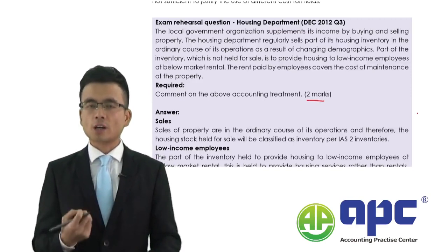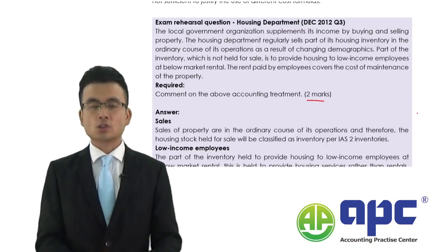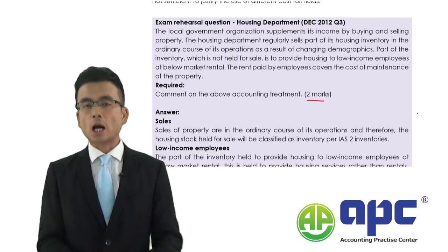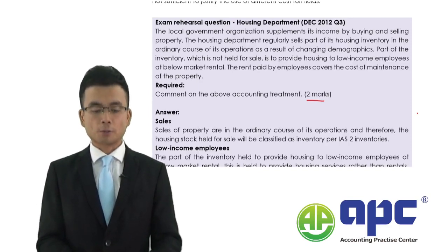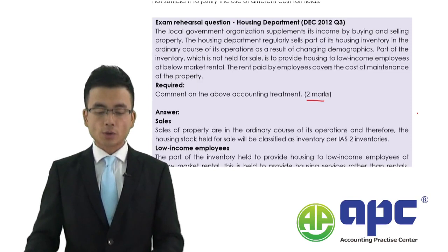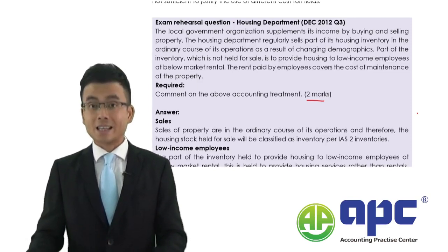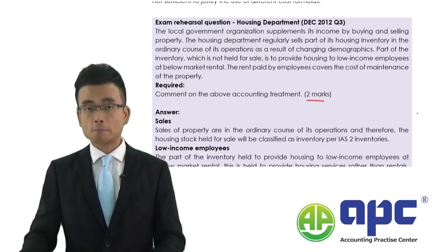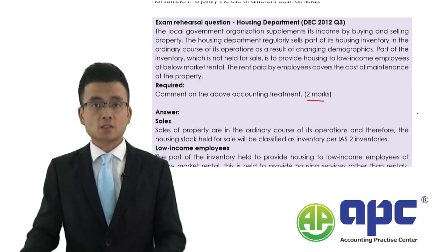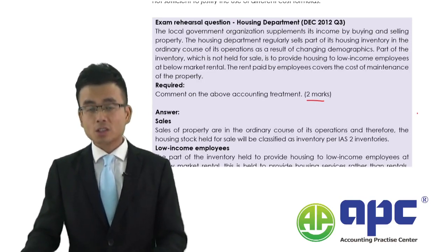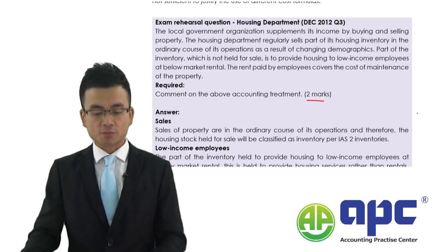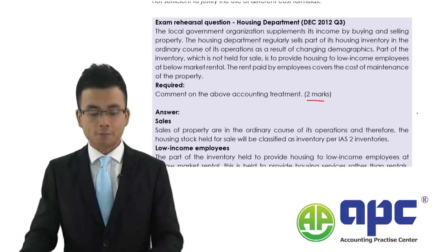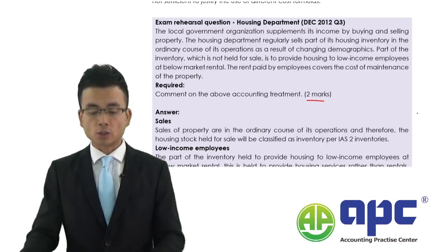What we're trying to do is write two sentences related to the requirement — normally two long sentences would be fine. The local government organisation supplements its income, which means increases the income, by buying and selling property. The housing department is one of the departments in that local government that regularly sells parts of its housing inventory in the ordinary course of its operations as a result of changing demographics.